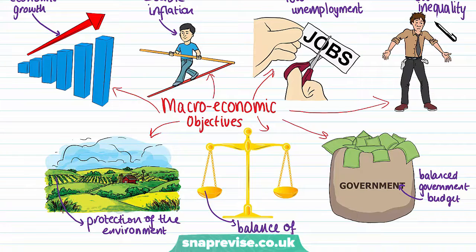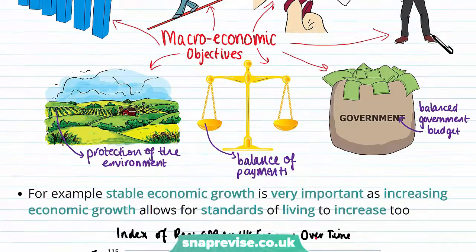With all of these objectives, sometimes the government will use supply-side policies in combination with demand-side policies, which can help achieve these seven macroeconomic objectives by influencing aggregate supply rather than aggregate demand. We will cover this in more detail later.